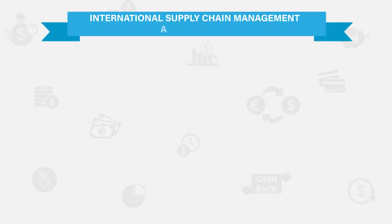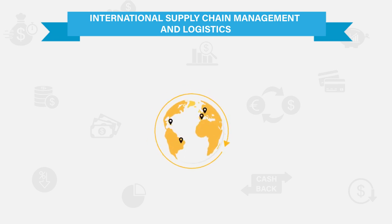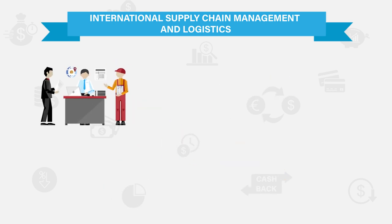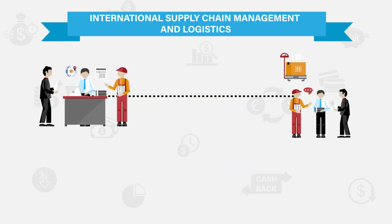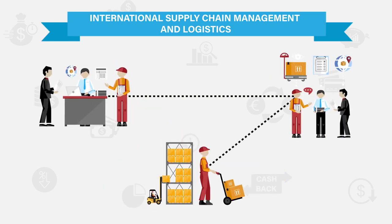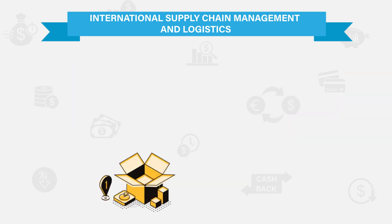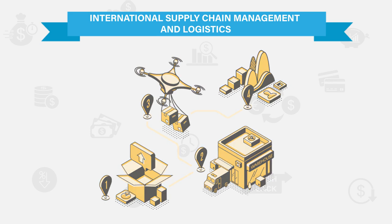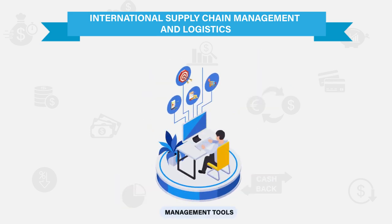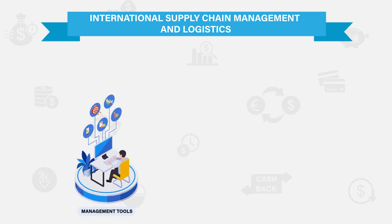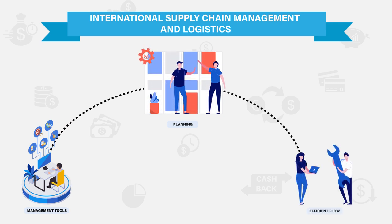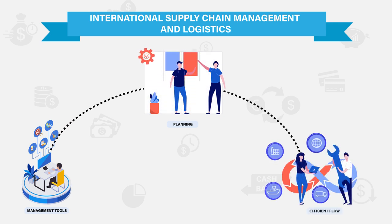International Supply Chain Management and Logistics makes reference to the management or control of both physical and information flow concerning a wide variety of goods, tracking them from the point of their origin until they reach the destination. This management is done with the help of a number of tools, which provide support when it comes to planning and implementing the set plans for the efficient flow of the supply chain.